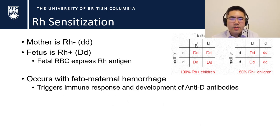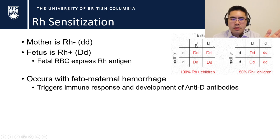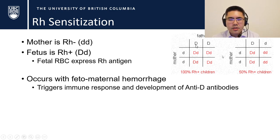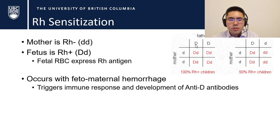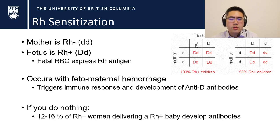Talking about Rh sensitization and how it happens: this requires an Rh-negative mother. There are two copies of each D allele, and looking at a Punnett square, the father can either be homozygous (DD) or heterozygous (Dd). Depending on whether the father is homozygous or heterozygous, this leads to either 100% or 50% of the children having Rh-positive antigen. The fetus must be Rh-positive for sensitization to occur. The red blood cells in the fetus will express Rh antigen, and sensitization only occurs when there is fetal-maternal hemorrhage — once fetal blood cells cross into maternal circulation, this triggers an immune response and development of anti-D antibodies. If you do nothing, 12 to 16% of Rh-negative women delivering an Rh-positive baby will develop these antibodies, which is tremendously harmful to fetuses and babies.